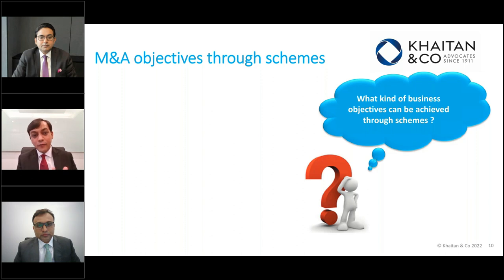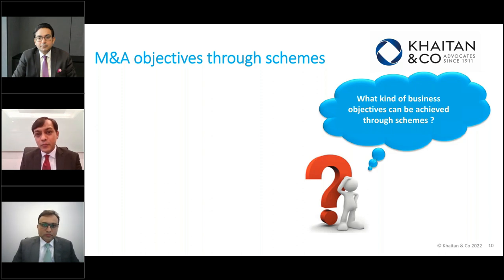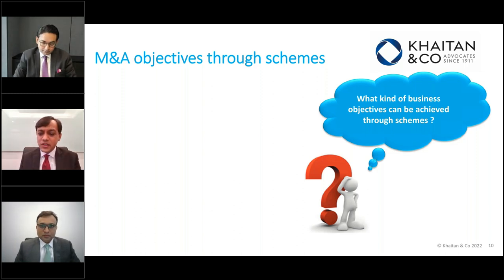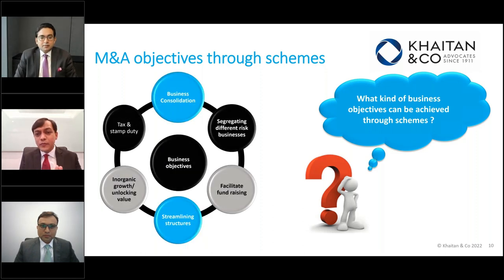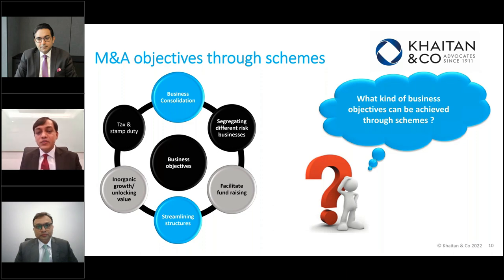As will be explained, schemes have been used for multiple business purposes. Most of the time schemes were used for very narrow objectives, but now we are seeing a different kind of objectives which can very easily be achieved through schemes. One of the objectives is business combination — if a group has multiple businesses acquired in the past with multiple entities doing similar kinds of businesses, one of the easiest ways to consolidate businesses without paying significant taxes is through a merger scheme.